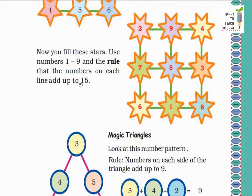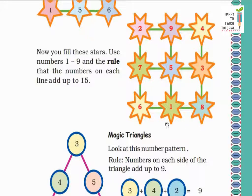Now let's see another pattern. Fill this star using numbers 1 to 9, with the rule that the numbers on each line add up to 15. Let's check: 2 plus 9 is 11, plus 4 is 15. Same way this line: 4 plus 3 is 7, plus 8 is 15. This line: 7 plus 5 is 12, plus 3 is 15. And 6 plus 1 is 7, plus 8 is 15. Next: 9 plus 5 is 14, plus 1 is 15.